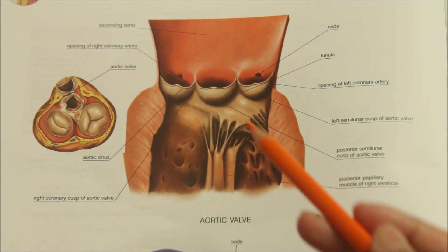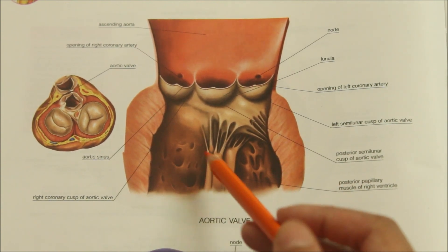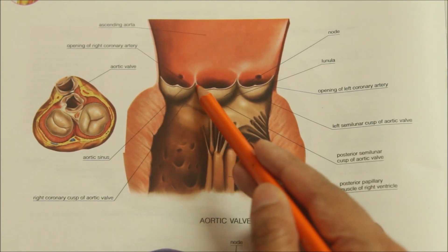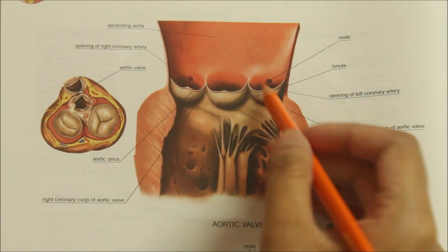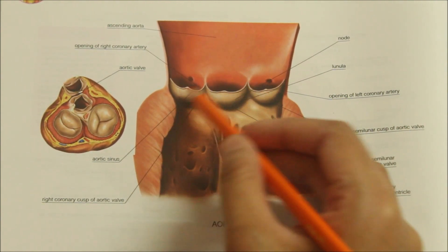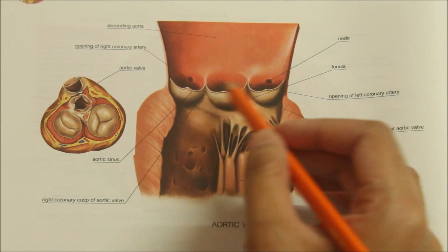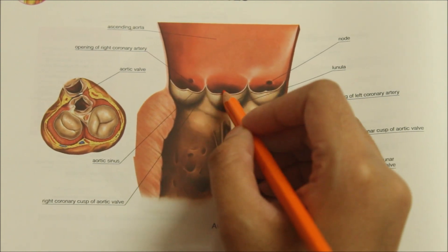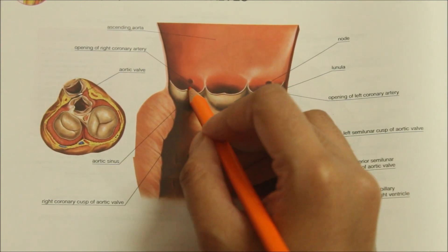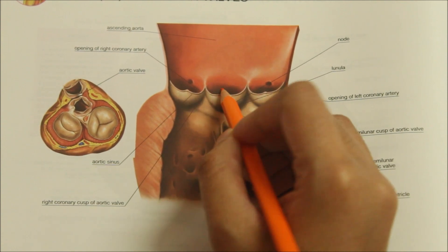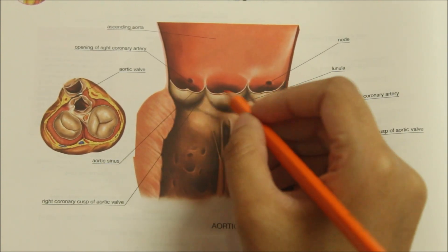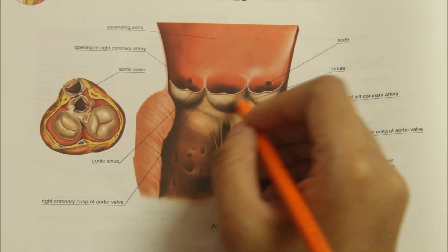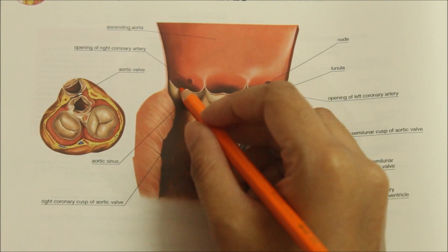Moving on to the semilunar valves — here we have the aortic valve. The aortic and pulmonary valves are called semilunar because their cusps are semilunar in shape. These valves have no fibrous ring. The cusps form small pockets with their mouths directed away from the ventricular cavity. The free margin of each cusp has a central fibrous nodule. From each side of this nodule, a thin smooth margin extends to the base of the cusp — these are called the lunules.